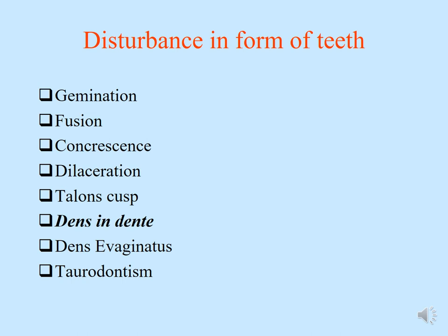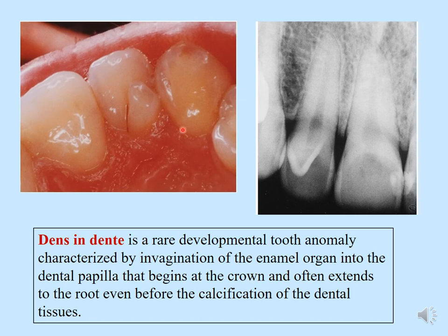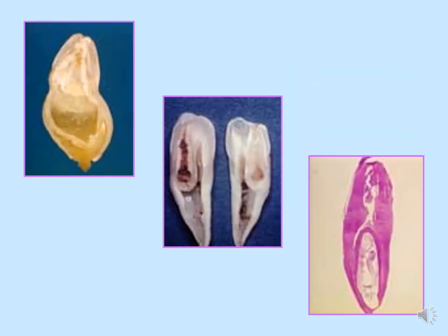The next is dens invaginatus, the term meaning 'tooth within a tooth.' Dens invaginatus is a rare developmental tooth anomaly characterized by invagination of the enamel organ into the dental papilla, beginning at the crown and often extending to the root before calcification of dental tissues. There is an appearance of a tooth structure within another tooth structure with very large pulp chambers. Another name for dens invaginatus is dens in dente. This anomaly makes the tooth very prone to caries and periapical pathologies.